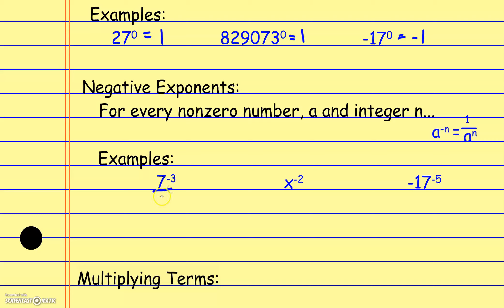Here we have 7 to the negative 3rd power, which equals 1 over 7 to the 3rd power, and then we could simplify 7 to the 3rd if needed. Similarly, x to the negative 2nd power is 1 over x to the positive 2nd power. And this next one becomes negative 1 over 17 to the 5th power, because the negative doesn't get applied to the exponent since there are no parentheses.